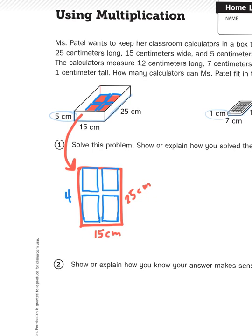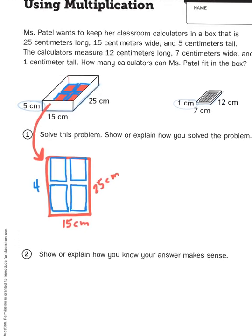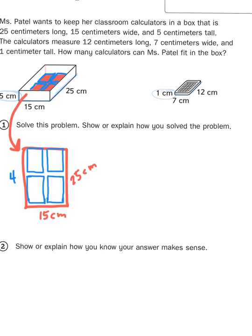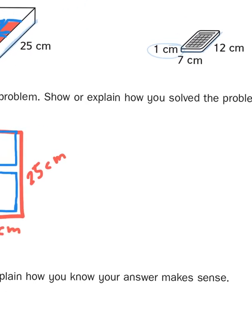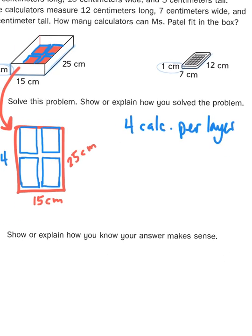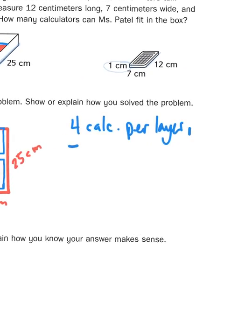So how many calculators could I fit in this box? Well, if I could do a layer of four calculators to cover up the surface area of that bottom, then I could create five layers of calculators. So I have four calculators per layer. And there are five layers possible. Are you starting to see the answer?